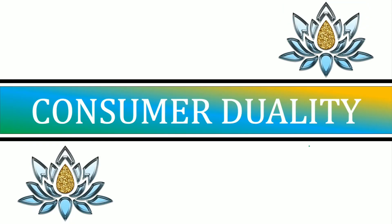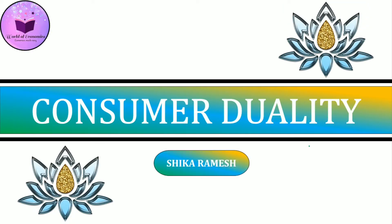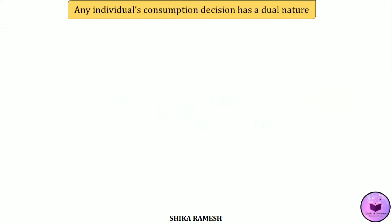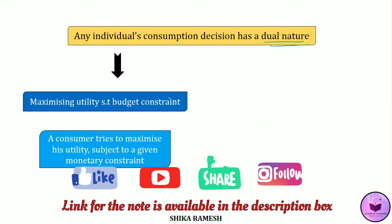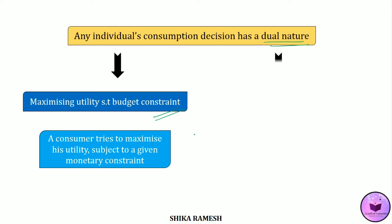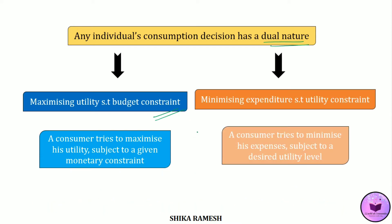Hello friends, in today's video we shall go through the concept of duality in consumer theory. A consumer's consumption decision has got a dual nature. The consumer can either maximize his or her utility subject to a budget constraint, or minimize his or her expenditure subject to a utility constraint. These are the dual approaches to consumer theory.